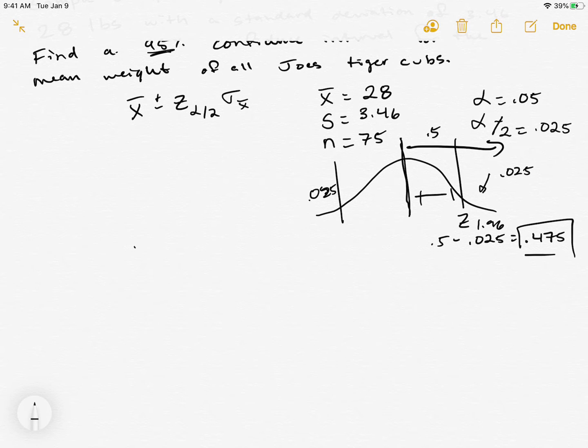Now we just plug stuff in. We got 28 plus or minus our z critical value multiplied by the standard error. The standard error is just your standard deviation over the square root of n. I will plug this into the calculator right quick.